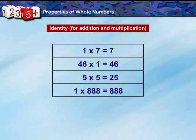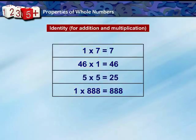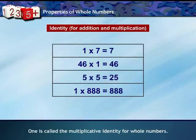Similarly, when we multiply a whole number by 1, the product is the same whole number. Therefore, 1 is called the multiplicative identity for whole numbers.